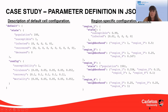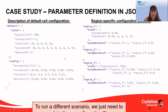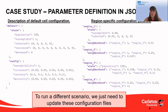For region one, we modify the state because in that region the amount of susceptible individuals is 99% and the ratio of infected individuals is 1%. We also define the neighborhoods, so for region one the neighbors are region one and region three, and we set the correlation factor here. To run different scenarios, the only thing we need to do is to modify these parameters.